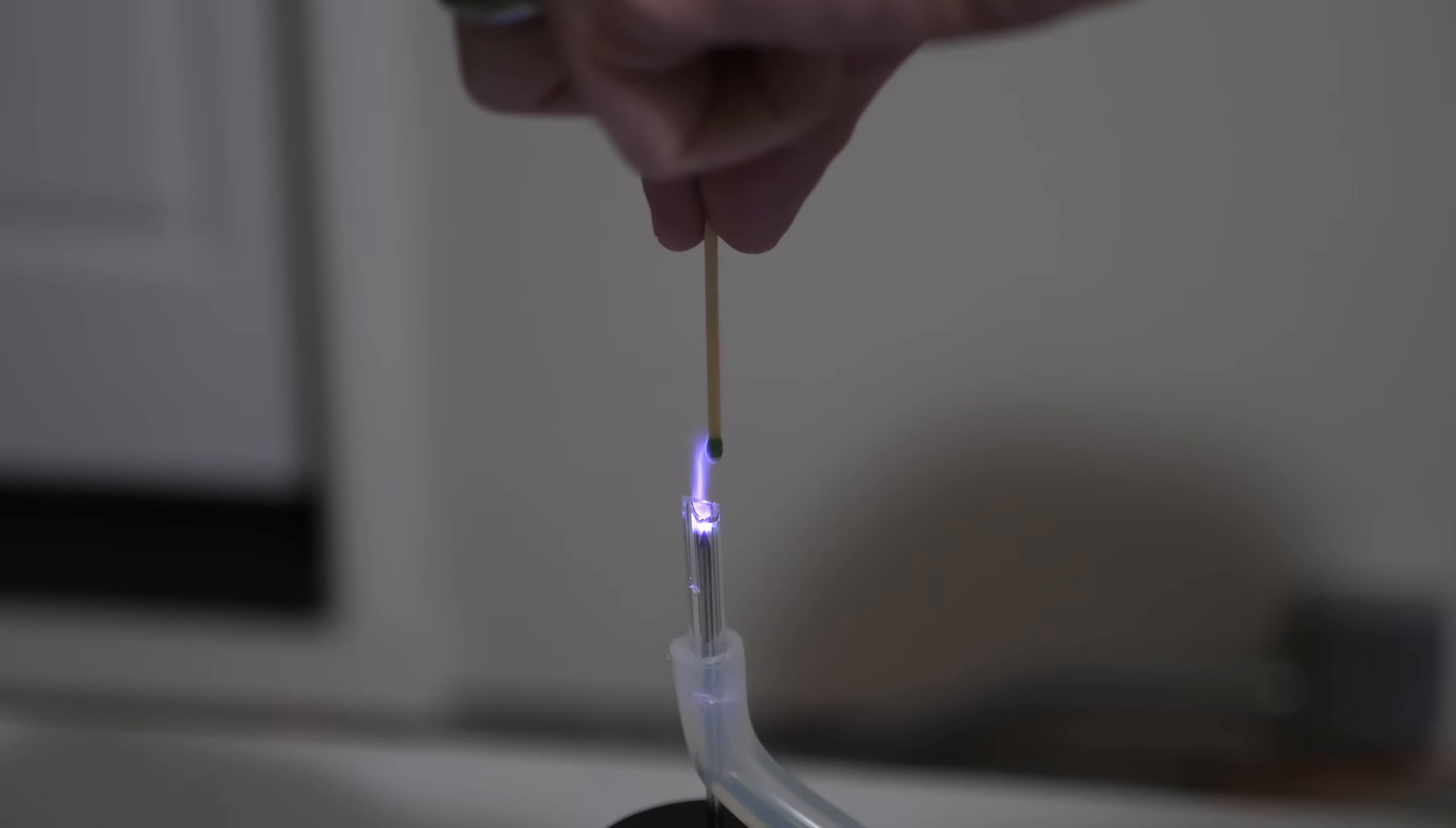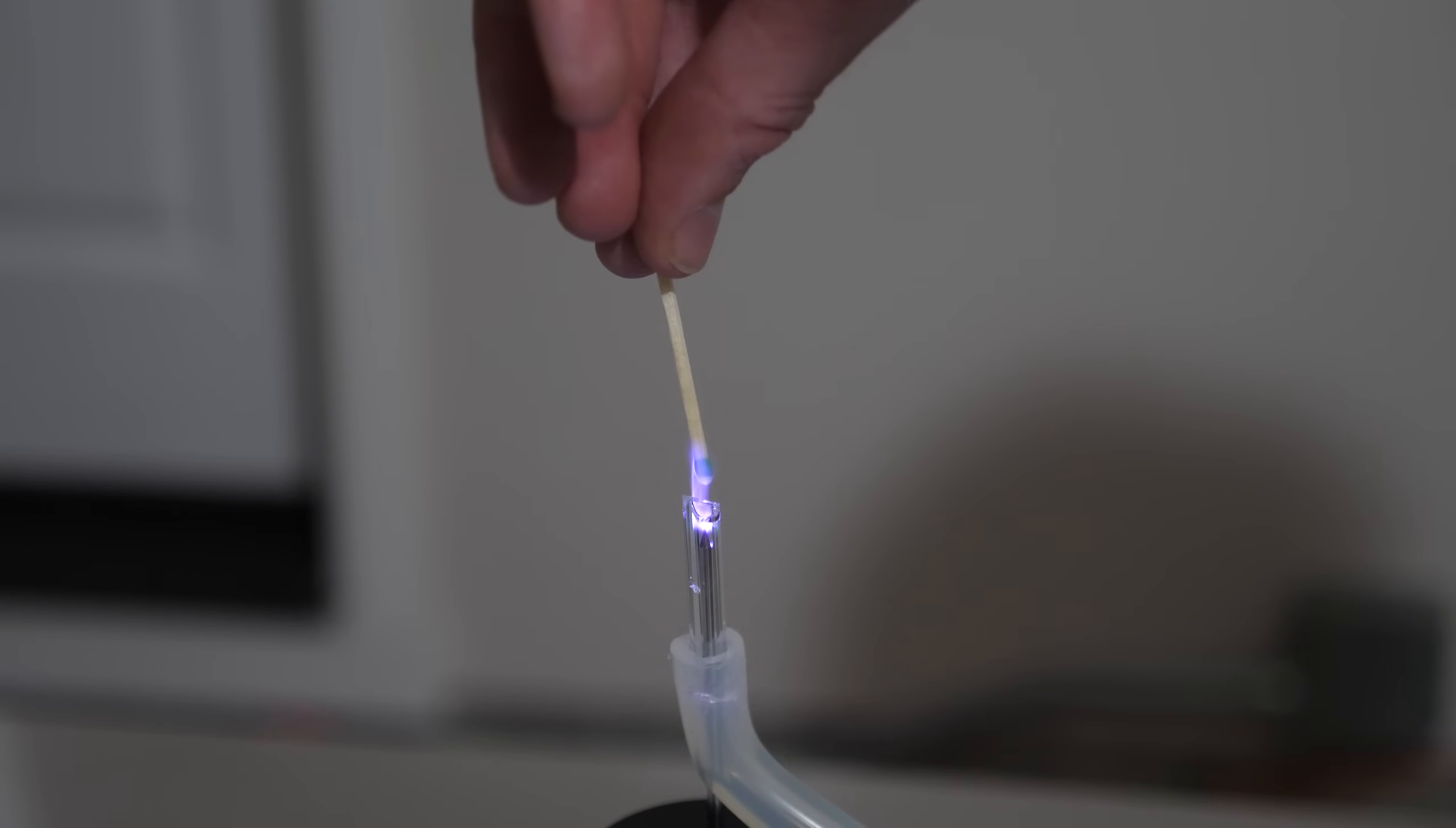So the temperature of these electrons can be tens of thousands of degrees but still they have such a low mass that they can't transfer their thermal energy to the match to get it to high enough temperature to light it on fire.